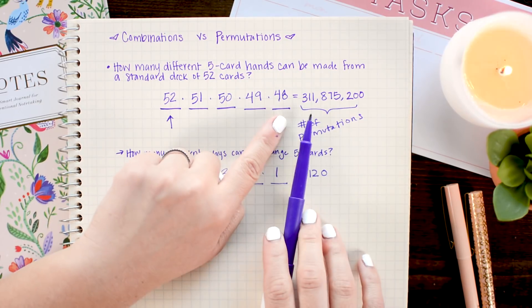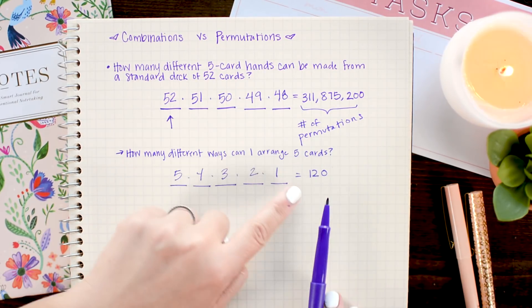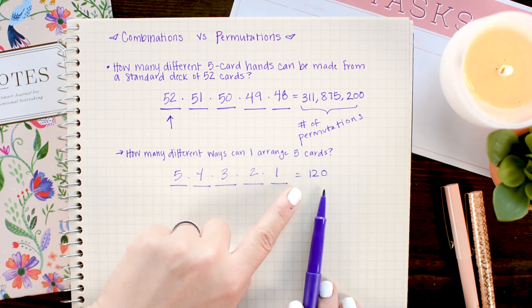I want to get rid of all of those repeated arrangements. So, I'm going to take our number, our total number of permutations, and divide it by 120, which is all the ways I could arrange any five cards.